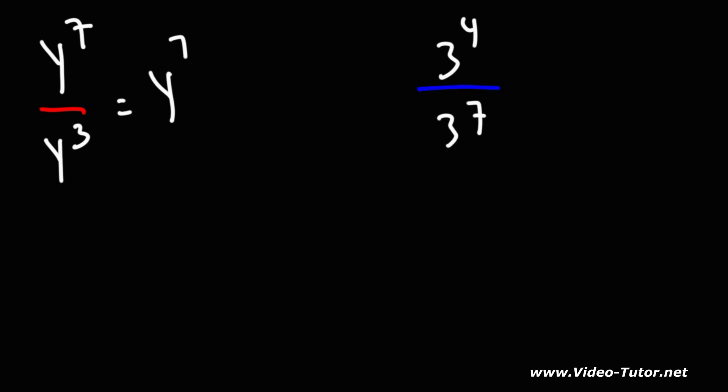So for this one, it's going to be the top exponent minus the bottom exponent. 7 minus 3 is 4. So it's simply y to the 4th.